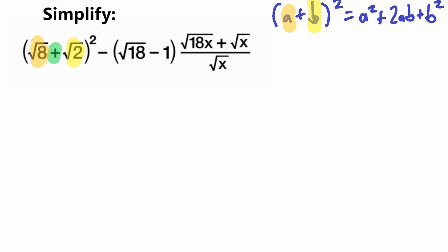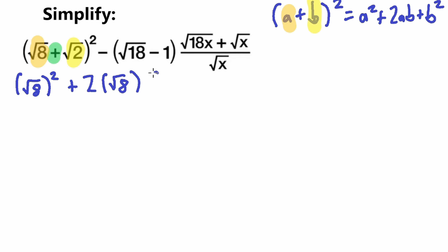Our a squared — since our a is square root of 8 — gives us square root of 8 squared, plus 2ab which is 2 times square root of 8 times square root of 2, and then plus b squared, which is square root of 2 squared. So now we have simplified our first part.